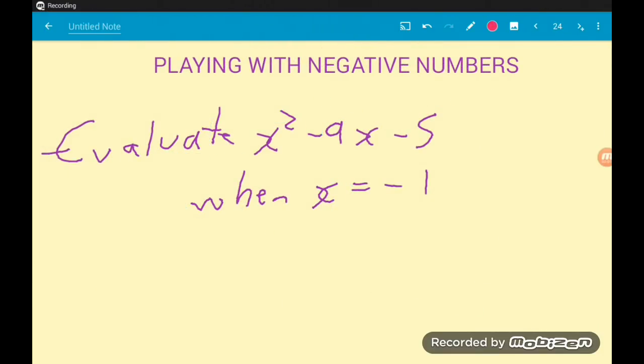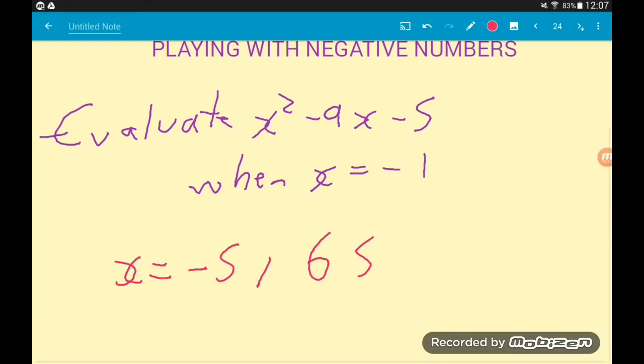Have a go substituting in x equals minus 5 and you should get your answer as positive 65. When x is minus 10 then we should get positive 185. Make sure you can get those and remember: negative numbers, put brackets around them.